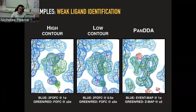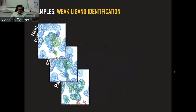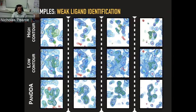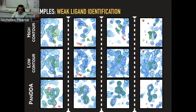Running this on many fragment screens, you always see a common feature: the normal 2FOFC and FOFC maps suggest maybe something needs modeling, but the ground state is clearly defined. As soon as you calculate the PANDA event maps and Z-maps, you can clearly see where your ligand is and how it's bound, and confidently interpret the electron density without worrying about superposed states. Running this on data set after data set, these things jump out even where there was absolutely no indication that anything was bound in the conventional maps.